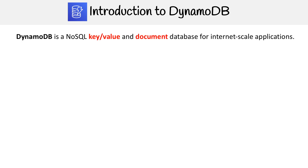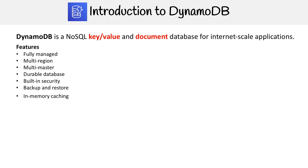DynamoDB is a NoSQL key-value and document database for internet-scale applications. It has a lot of great features: it's fully managed, multi-region, multi-master, durable, with built-in security, backup and restore, and in-memory caching. You can see why this is AWS's flagship database that they're always promoting — it has so much functionality.